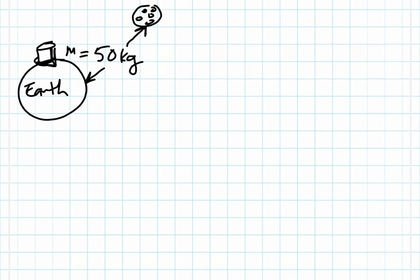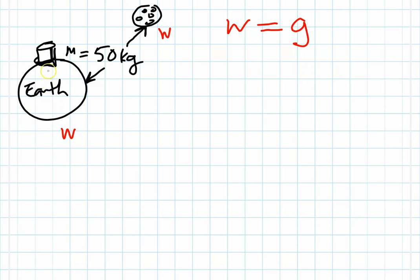An object's weight is actually going to be different. The object's weight on the Earth will be different than the object's weight on the Moon. Weight of an object is directly proportional to the gravitational pull on the object. The Earth has a larger mass than the Moon, so the Earth is able to exert a larger gravitational pull on the object than if this same object were on the Moon.